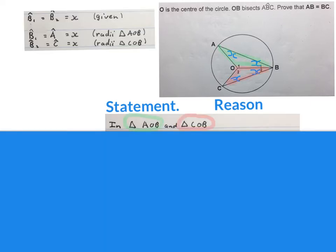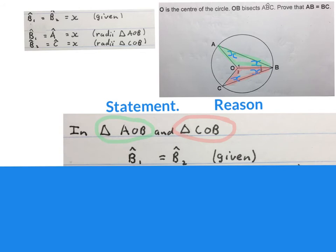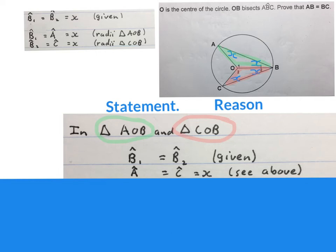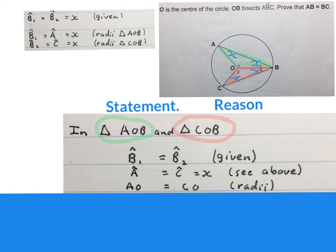Now we're going to start with our congruency. We say: in triangle AOB and triangle COB — the green triangle and the red triangle. We write angle B1 is equal to angle B2, it was given — they told us that OB bisects this angle. Then we write angle A is equal to angle C is equal to X, as explained above. Then we can say AO is equal to CO because they are radii.